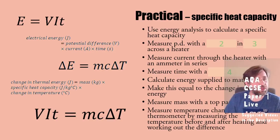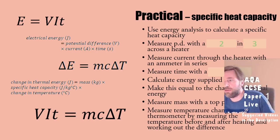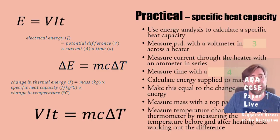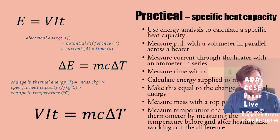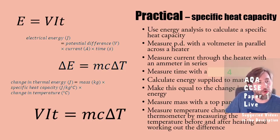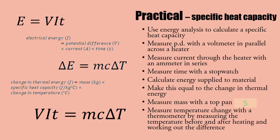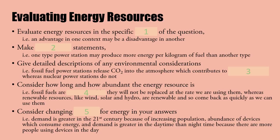This is the specific heat capacity practical. Essentially you're using energy analysis. Measure the PD with a voltmeter in parallel across a heater. Measure current through with an ammeter. Measure time with a stopwatch. Calculate the energy supplied using VIt. Make this energy equal to the change in thermal energy. Measure mass with a top pan balance. Measure the temperature change with a thermometer by measuring before and after heating and working out the difference.